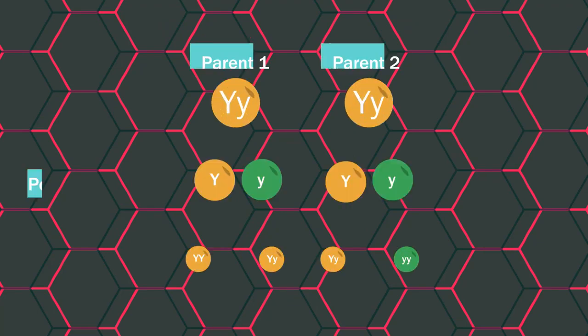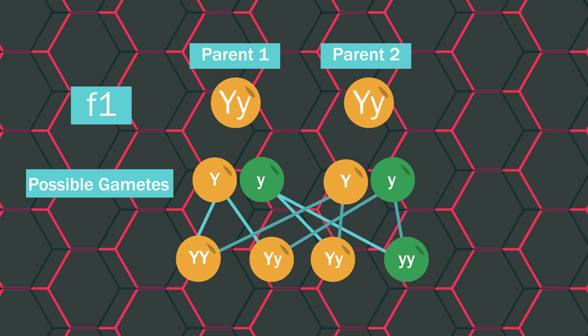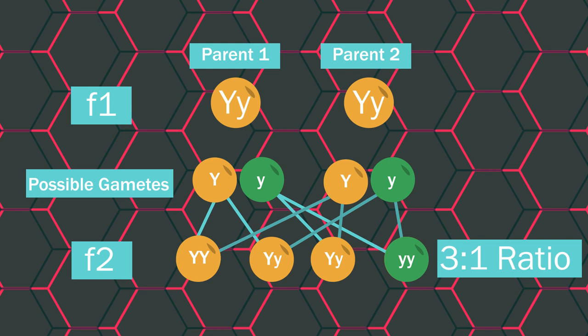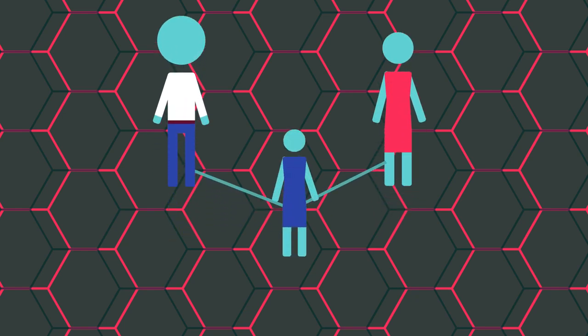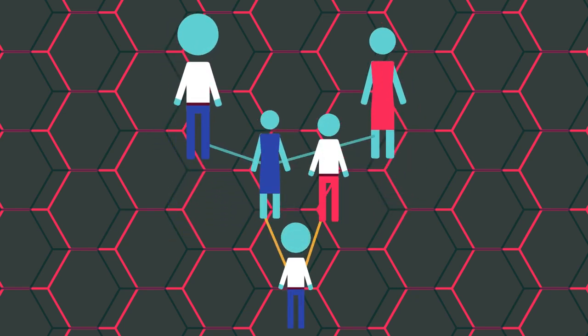Now let's see what happens if we cross two of the F1 offspring generation. In our next generation, F2, we have three yellow pods, but this time we have a green pod offspring that has both recessive green genes. Mendel consistently found this 3 to 1 ratio in later generations as well, which led him to his proposal that traits might not show up in an individual but can still be passed on to the next generation.